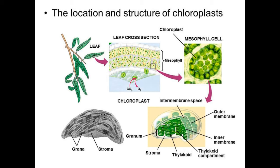In the leaf there is palisade tissue, or we can call it mesophyll cells, where the chloroplast is present. There are stomata which occur on the ventral surface of the leaf, from where gaseous exchange and water vapor exchange take place.